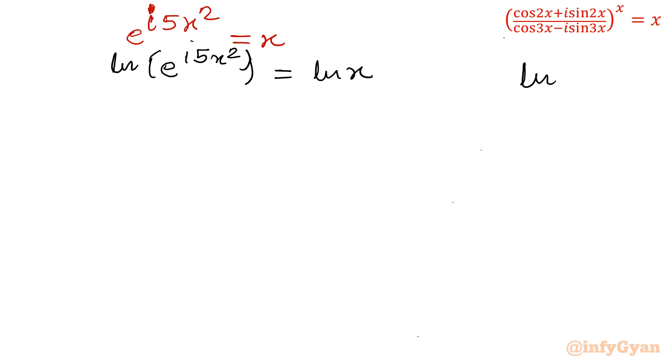Now property of ln, a power b equal to b ln a. So i times 5x square will come down: i times 5x square ln e equal to ln x. We know that ln e is always 1.